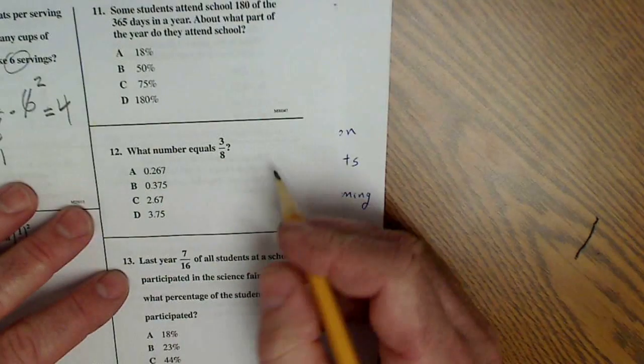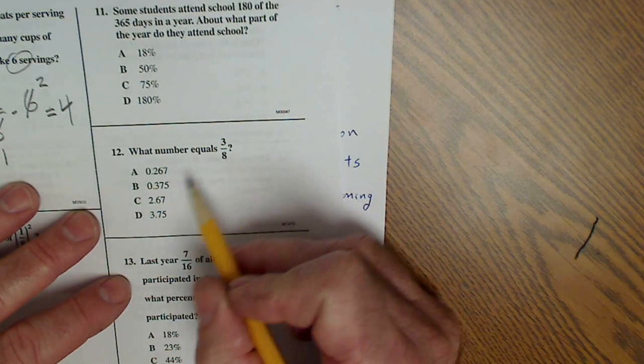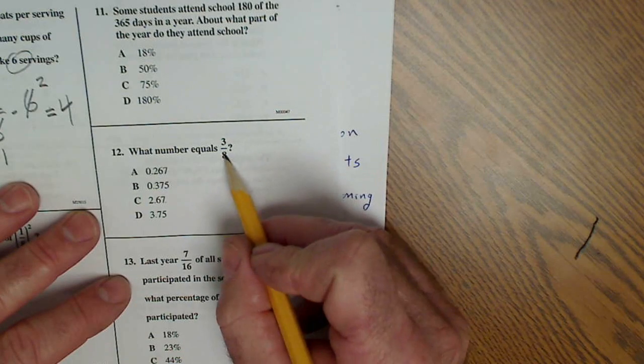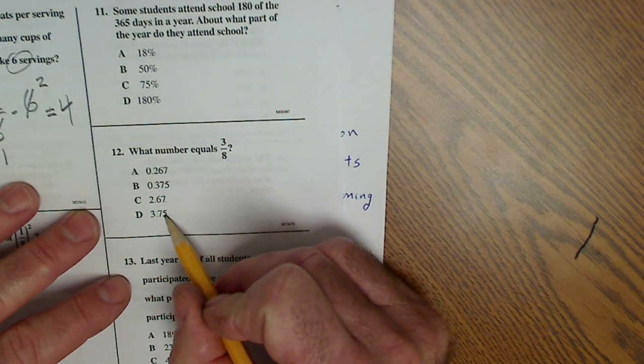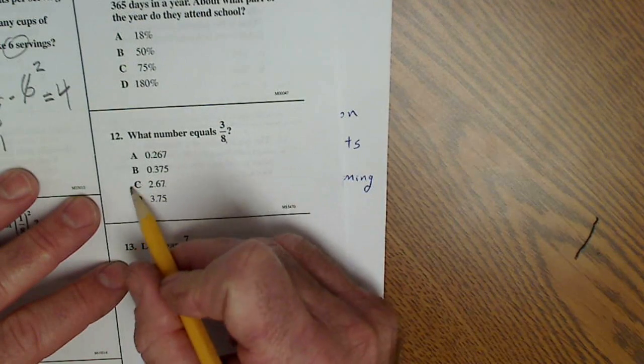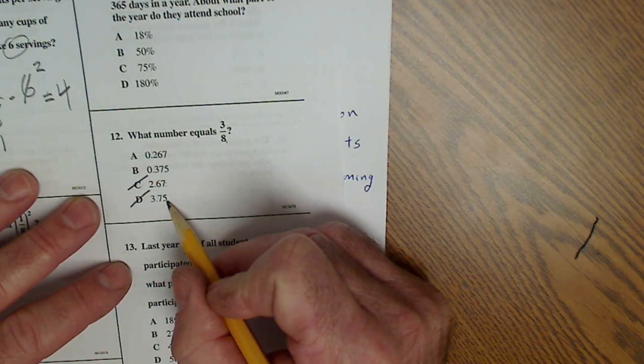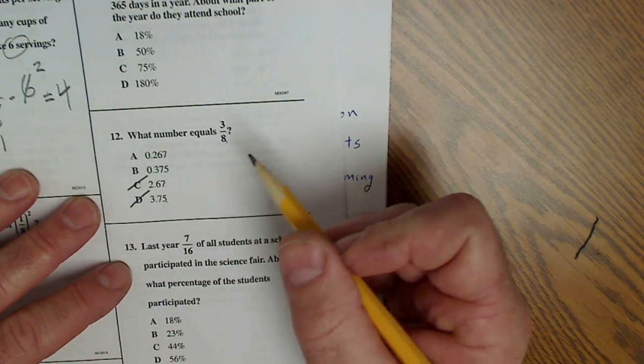So I skip over here to problem number 12. What number equals 3/8? So again, we have a fraction and a decimal. I need to convert this to this. And I could see right off that these answers don't even make sense. Right? Three-eighths is pretty close to a half. These are greater than one. So I could discard these two answers.